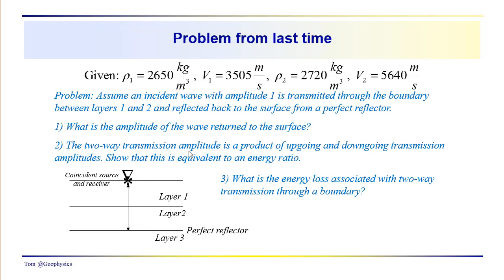The two-way transmission amplitude is a product of up-going and down-going transmission amplitudes. You're asked to show that this is equivalent to an energy ratio, and then to determine what is the energy loss associated with two-way transmission through the boundary.